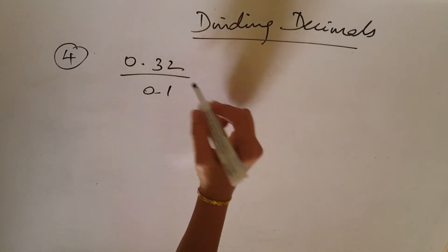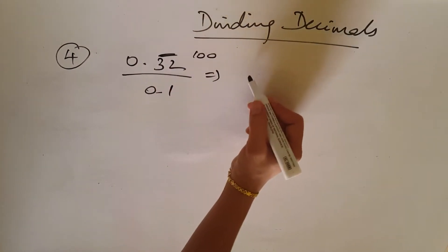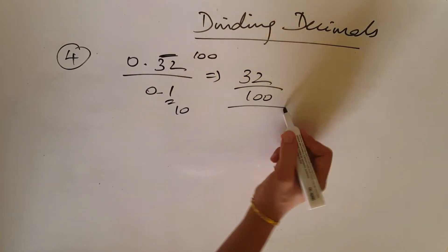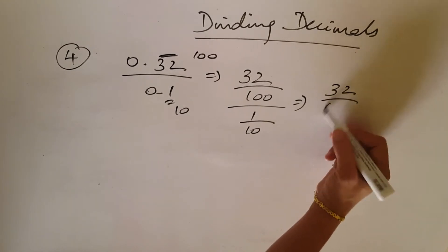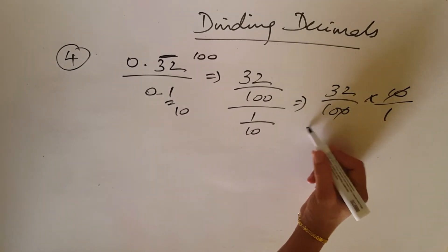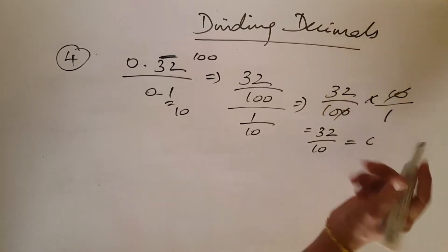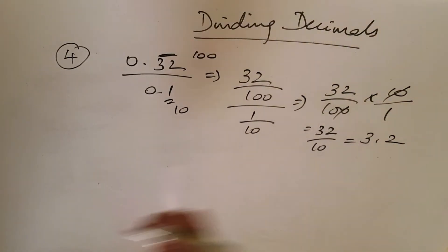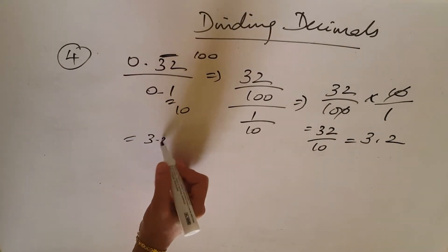Next question: 0.32 divided by 0.1. Since 0.32 is at the 100th digit, write 32 over 100. Since 0.1 is at the 10th digit, write 1 over 10. This becomes 32 over 100 multiplied by 10 over 1. The 10s cancel, leaving 32 over 10, which equals 3.2. The answer is 3.2.